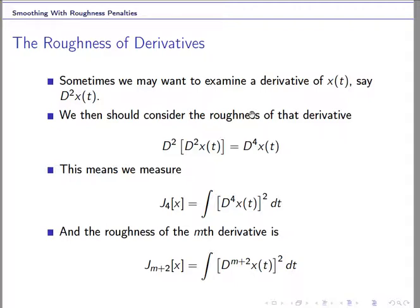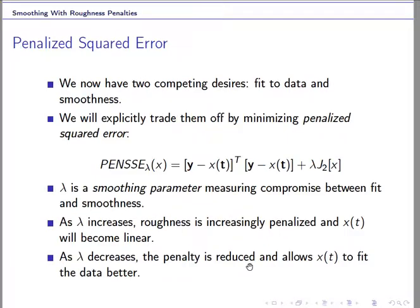Generally, if we want to estimate a curve x(t), we define the roughness penalty using the second derivative of the curve. If you are interested in estimating the m-th derivative of the curve, we add plus 2 — so we use the (m+2)-th derivative to define the roughness penalty. We then add this roughness penalty J₂ to the fitting criterion, giving us a penalized sum of squared errors.